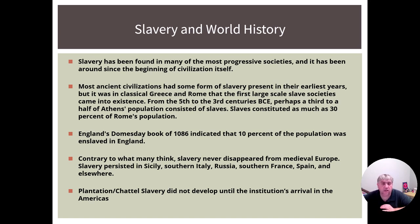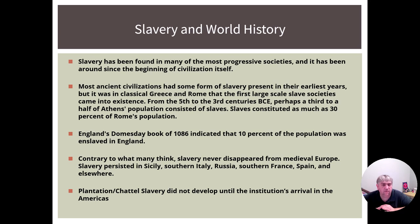We also like to think that slavery disappeared from Europe during medieval times, especially since we never really talk about it. But slavery stayed in Southern Europe, it stayed in Russia, and it stayed in other places much longer than we want to admit. Sicily had slavery through the end of the 1500s. France had slavery through 1831. Russia officially ended slavery in 1720, but they had serfdom up until 1906. So forms of slavery existed and persisted in Europe a lot longer than we commonly think.